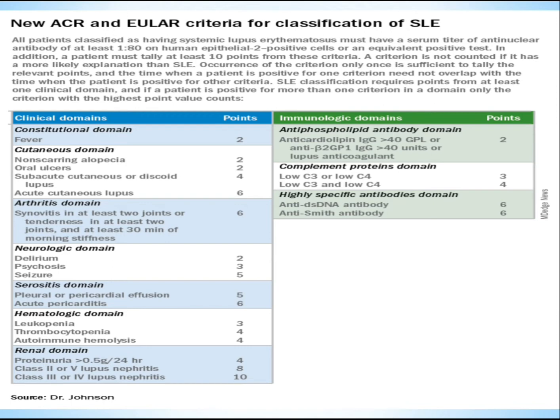Neurologic domain: delirium 2 points, psychosis 3 points, seizures 5 points. Serositis domain: pleural or pericardial effusion 5 points, acute pericarditis 6 points. Hematologic domain: leukopenia 3 points, thrombocytopenia 4 points, autoimmune hemolysis 4 points. Renal domain: proteinuria greater than 0.5 grams in 24 hours 4 points, class 2 or 5 lupus nephritis 8 points, class 3 or 4 lupus nephritis 10 points.